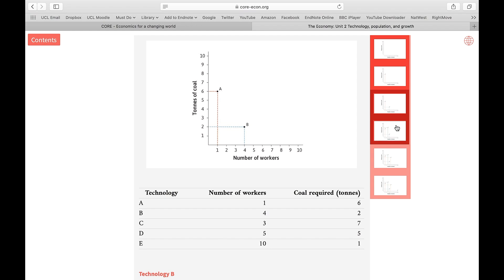We can think of other technologies that can produce the same amount of cloth, like C, D, or E. But let's focus on E. We call this a labor-intensive technology. Why? Because for producing 100 meters of cloth, E is using a lot of people, but very low amount of energy.